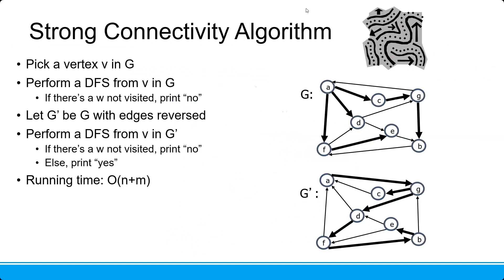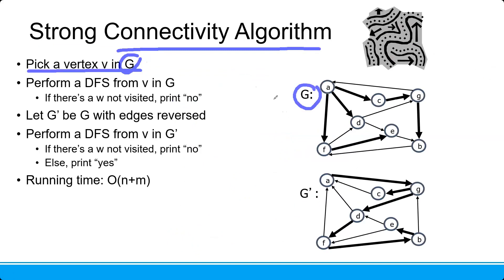So if you can find the reachability to all other vertices, then it is strongly connected. The strong connectivity algorithm is: we are going to find the reachability. We pick a vertex V in graph G, then we perform a DFS from V in G. If there is a vertex W not visited, print no.